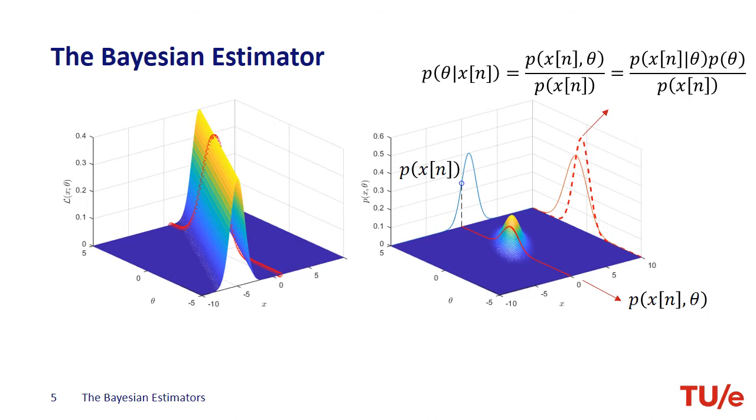So, given the sample data xn, we can calculate the probability density function for theta. Even better, we can set up this formulation for the probability density function of x already and use the sample data as the input to this formulation. Now, that is the essence of the Bayesian estimators. But why do we need the conditional probabilities? Don't we have the joint probability? Well, the answer is no.